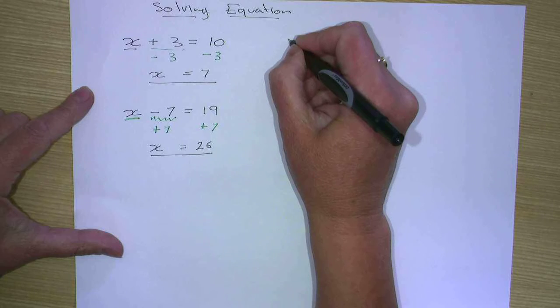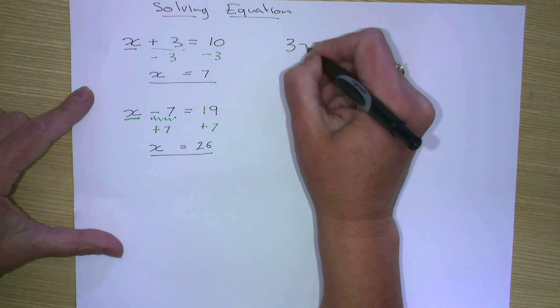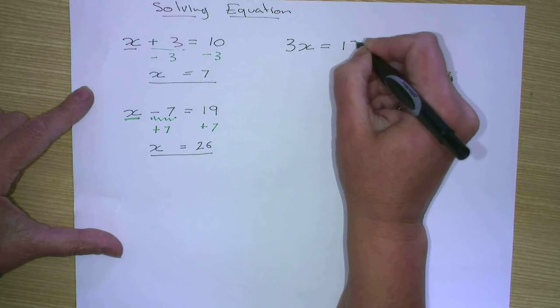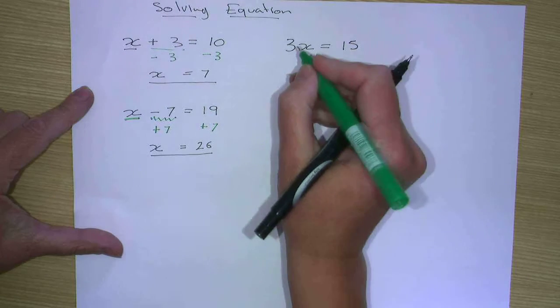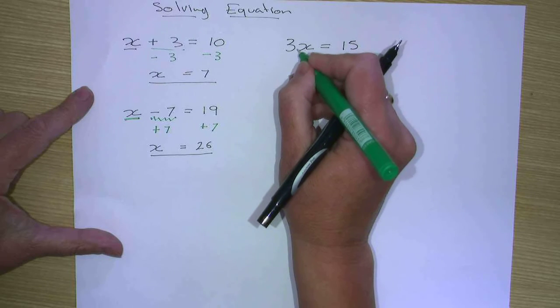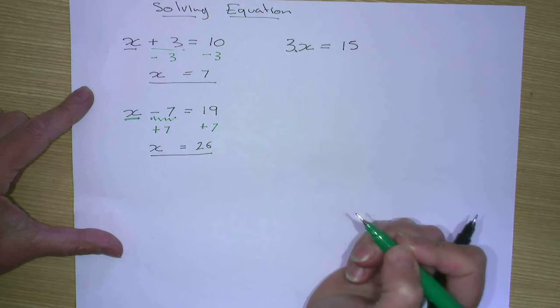So what happens if we have 3x equals 15? Now in this case, we know that when we write our numeral and our pronumeral next to each other like this, it has a times in it.